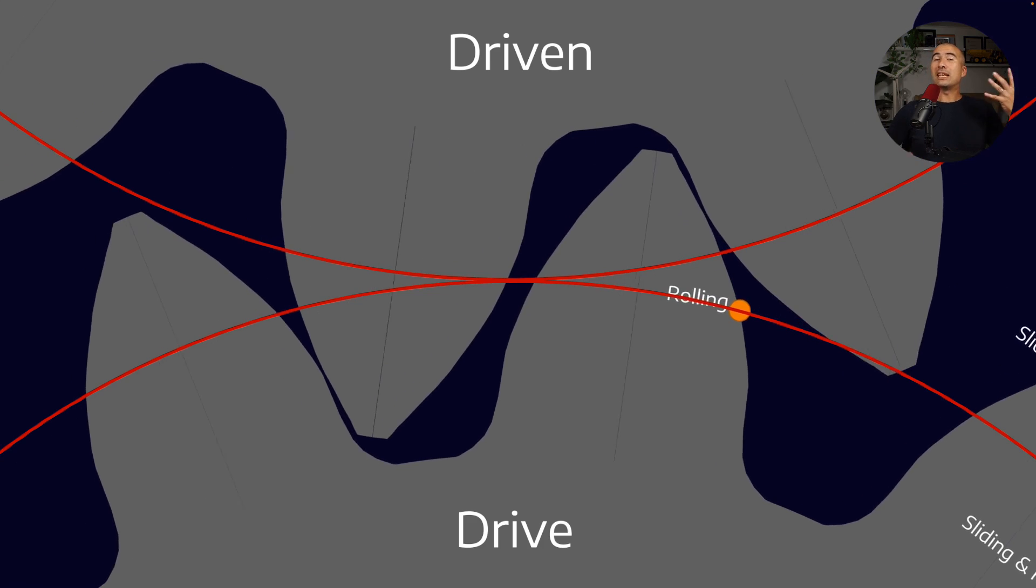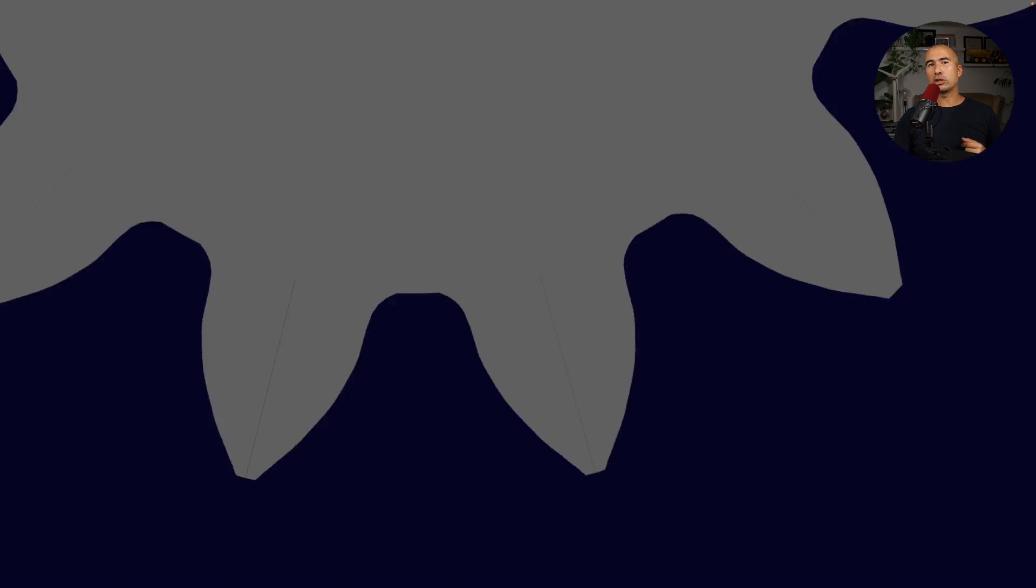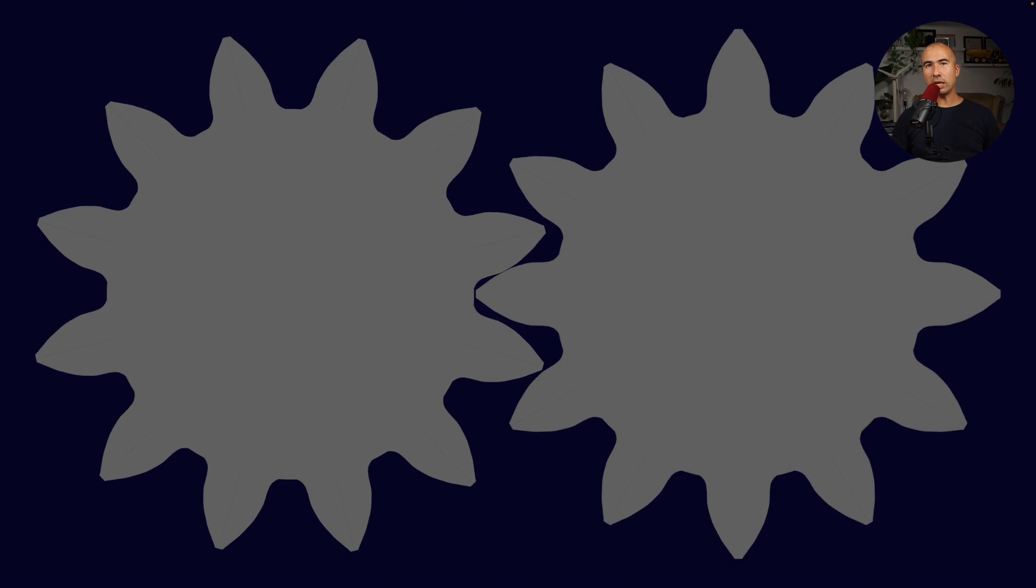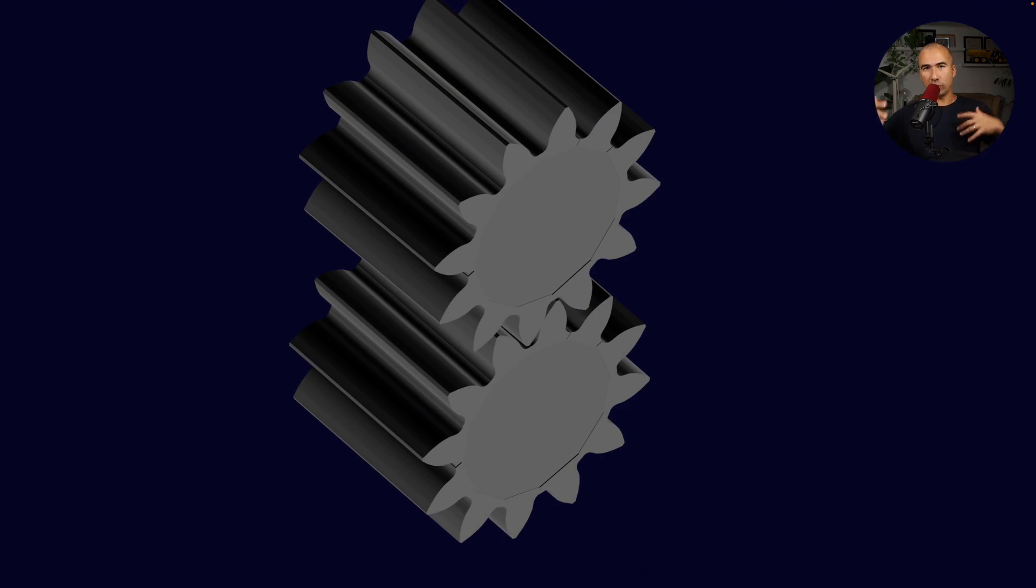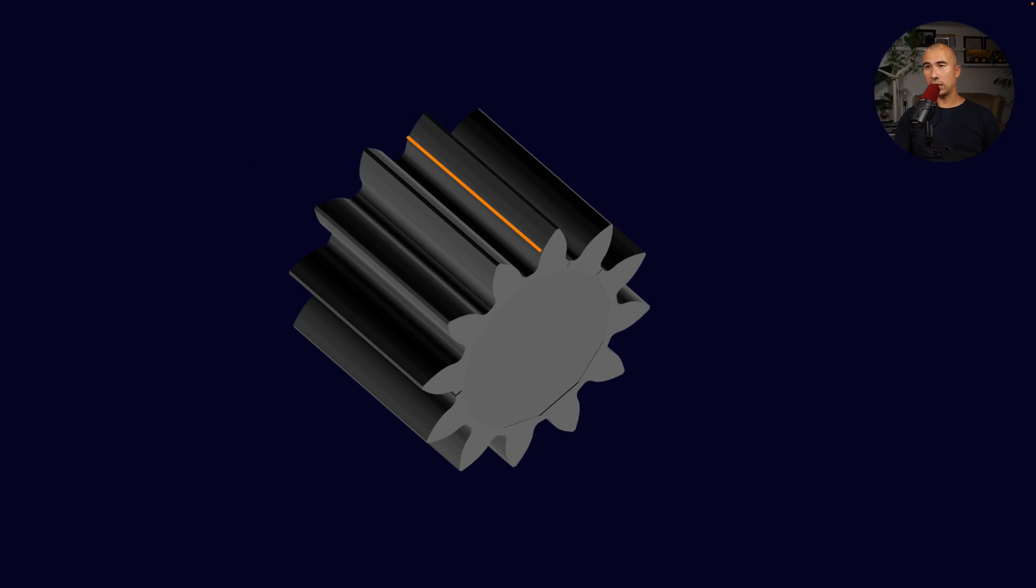But again, it's a combination of different contact points. We either have rolling or we have rolling and sliding. Furthermore, when you actually look at the contact surfaces between the gears in a 3D scenario, again, it's a line contact rather than being a point contact.